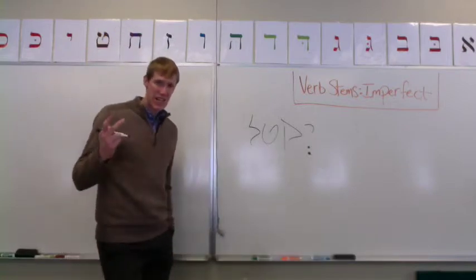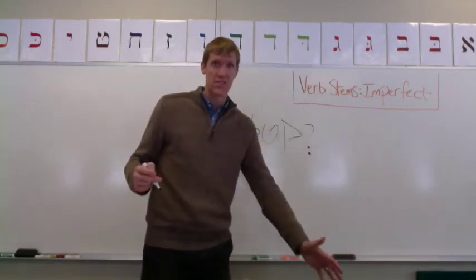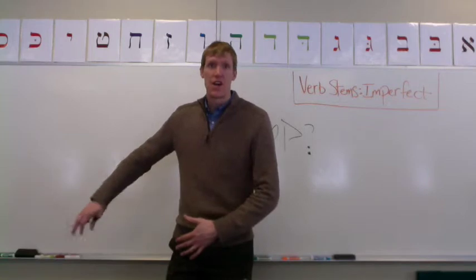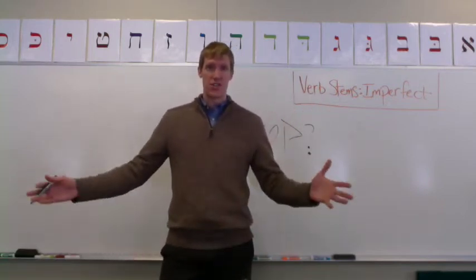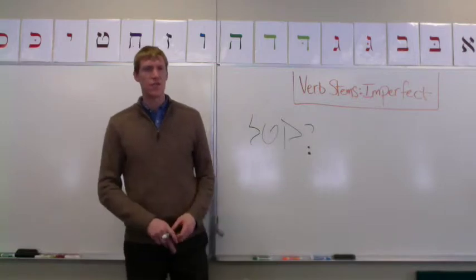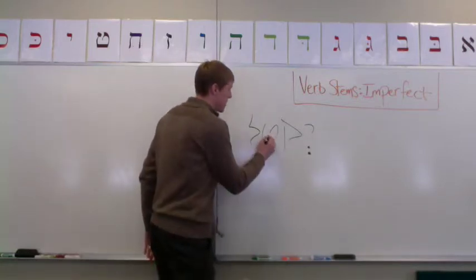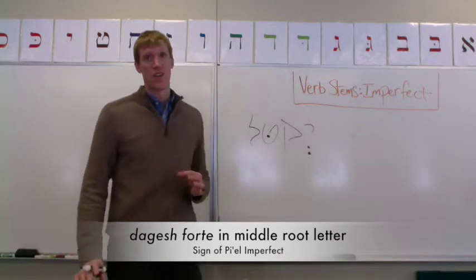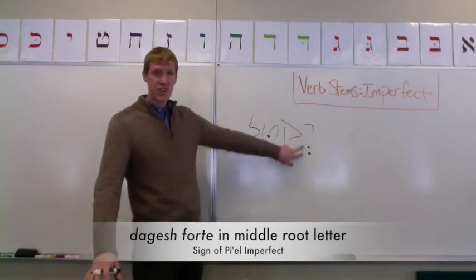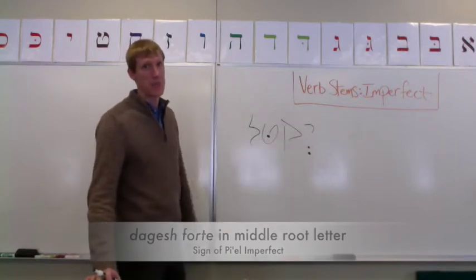And the second is the consistent sign of all of the intensive forms. If you'll recall from our flannel board diagram of the seven stems, that middle column is all of the intensive forms. All of the intensive forms have a dagesh forte in their middle root letter. So sheva under the prefix, dagesh forte in the middle root letter — you've got a Piel.